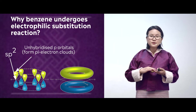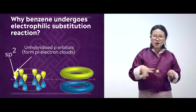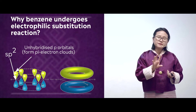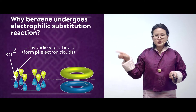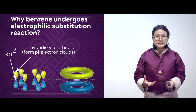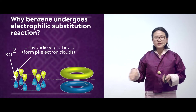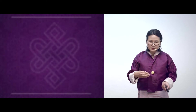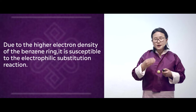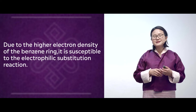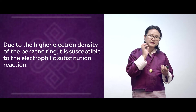One pi electron cloud is above the plane of carbon and one is below the plane of carbon. Because electrons are always moving around in benzene, there is delocalization of electrons and formation of a continuous pi electron cloud — one above and one below the plane of carbon. This results in higher electron density in the benzene ring, making benzene susceptible to electrophilic substitution reaction, since electrophiles love electrons.